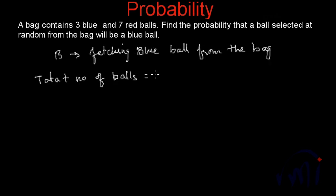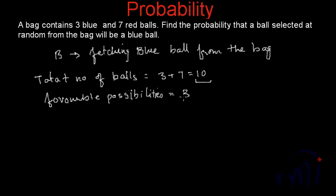The total number of balls is equal to 3 plus 7, which is 10. That means the total number of possibilities are 10. When you fetch a ball from the bag there are 10 possibilities, but there are only 3 blue balls, so the total number of favorable possibilities are 3. Therefore, the probability of getting a blue ball will be 3 out of 10. Here, 3 is the number of blue balls and 10 is the total number of balls.